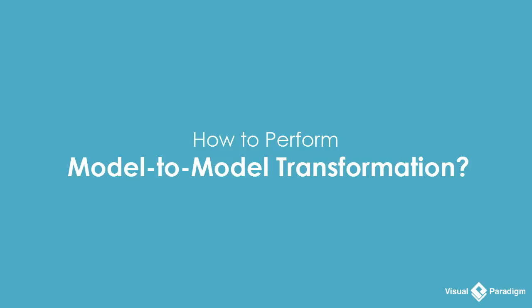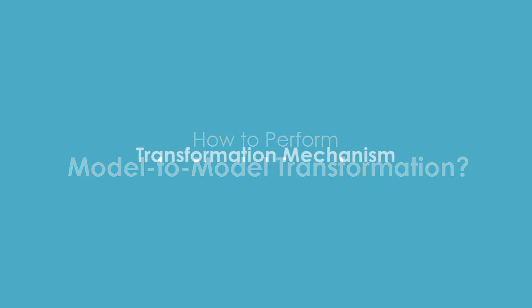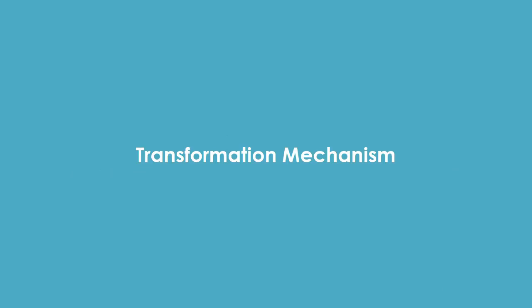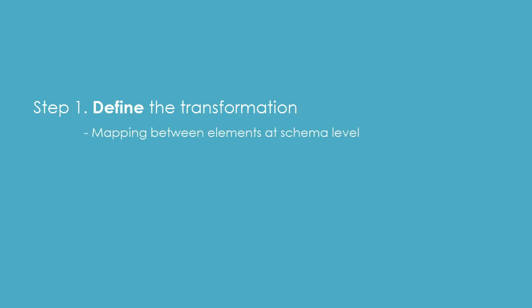Before we go into the demonstration, let's take a quick look at the transformation mechanism. A transformation consists of two parts or two steps. The first step is to define the transformation — note that I'm using the word 'define', not 'perform'. The definition of transformation determines the mapping between the source and target elements at schema level, not on a particular model element.